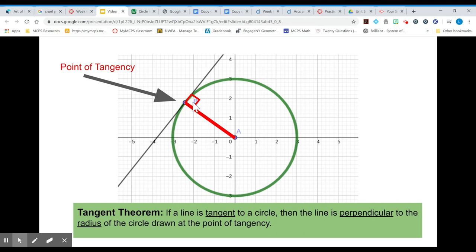They form a 90 degree angle and this is known as the tangent theorem which states that if a line is tangent to a circle then the line is perpendicular to the radius drawn to the point of tangency. There's only one radius we can draw to a point of tangency.